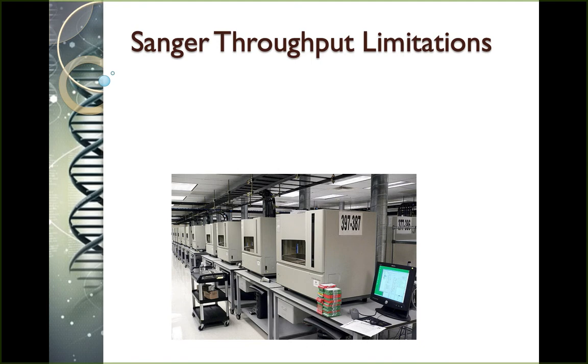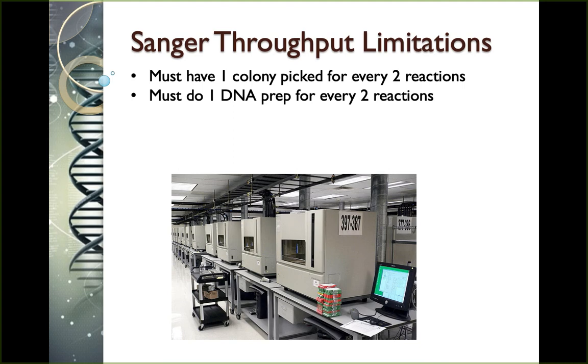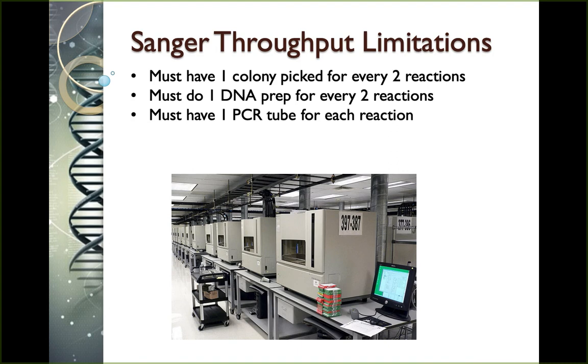This is a picture from where they sequenced the human genome, and you notice there's just endless number of Sanger sequencers there because it took a lot of machines to do that effort. Some things to understand here is Sanger's sequencing is very limited. It's very reliable, but it's very limited. In this case, you had to pick one colony for every sequence, which took a lot of effort to generate all those colonies, and you had to have two reactions - you had to sequence both the forward and reverse direction of that colony. You had to do a DNA prep for each of those reactions for every colony. You had to do a PCR for each of those reactions, and then you had to run it on a gel. It's just a lot of steps. It's really lab intensive. So it took a long time and a lot of effort to do this kind of work.